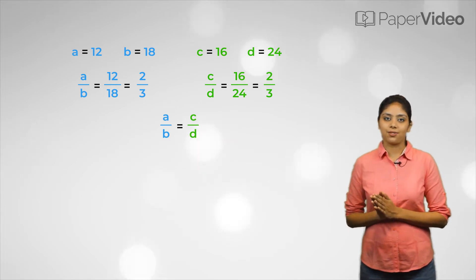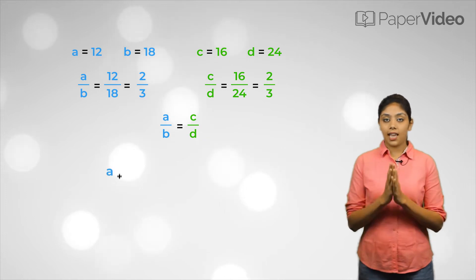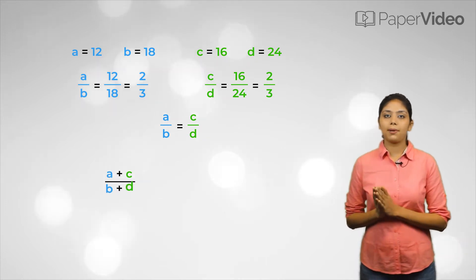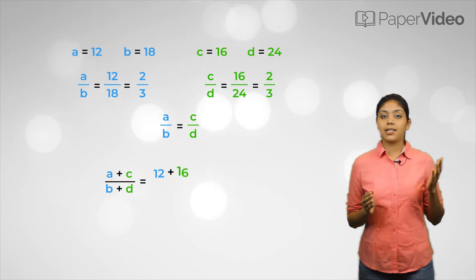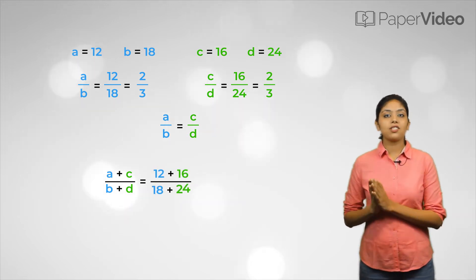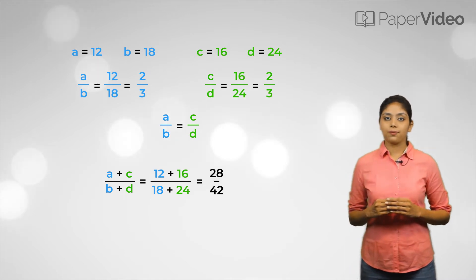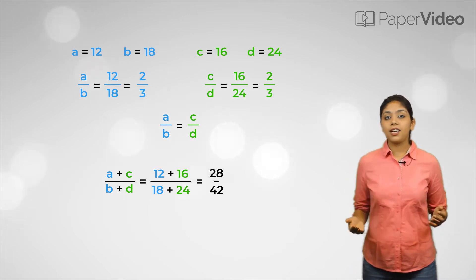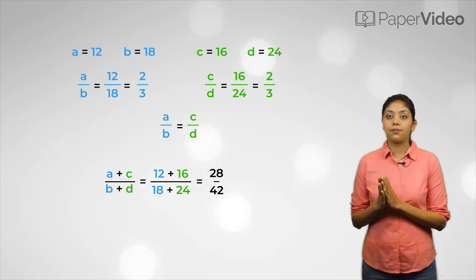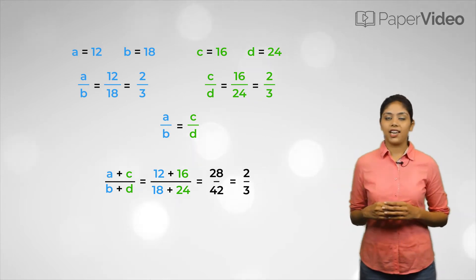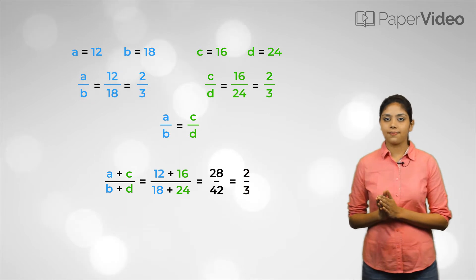Let us experiment with these ratios and find a plus c upon b plus d. We will get 12 plus 16 upon 18 plus 24, equal to 28 upon 42. If we divide the numerator and denominator of this ratio by 14, we will get 2 upon 3 — the same as the other two ratios.